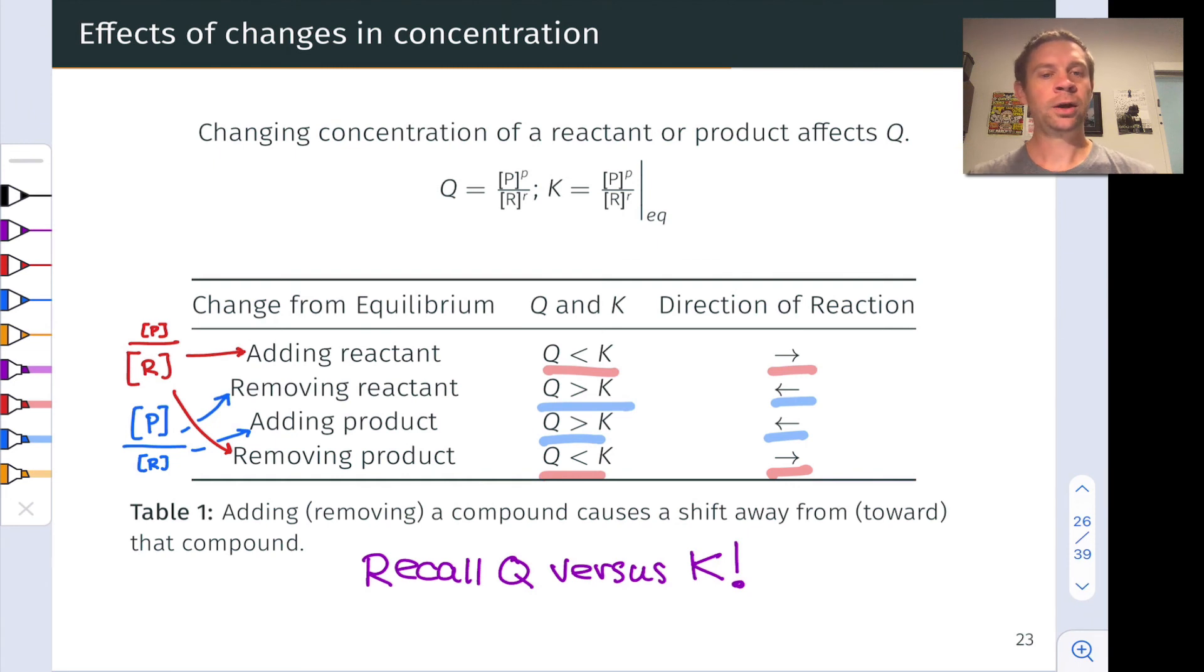So concentration effects are fairly intuitive if you have this dynamic model of equilibrium in mind, and you recall this key idea that it's all about the reaction quotient Q versus the equilibrium constant K. How will adding or removing a reactant or product modify the value of Q? If you've got a good handle on that, you can solve these problems involving concentration effects on the position of equilibrium with ease.